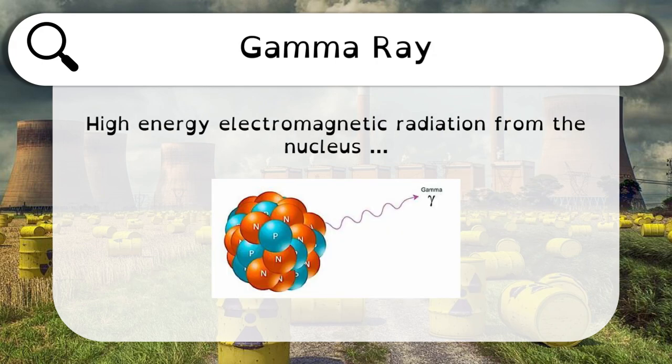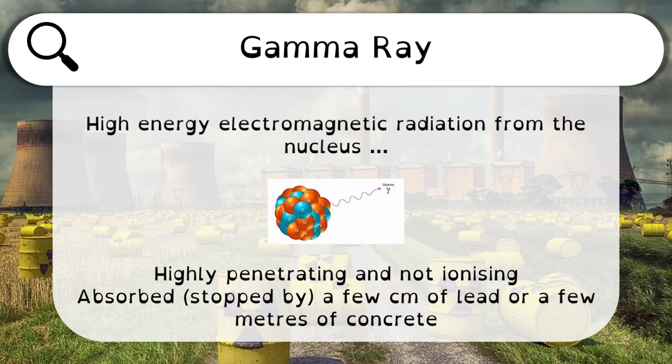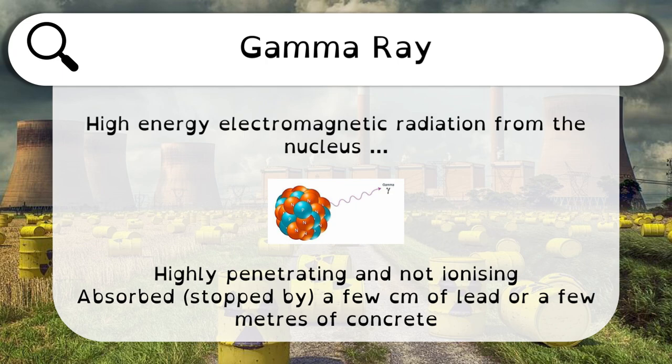Gamma is a high-energy electromagnetic ray that comes from the nucleus. Because it's a ray, it has no charge and is also massless, so therefore it's highly penetrating — it can pass through pretty much anything — and therefore it's not ionising. It gets stopped by a few centimetres of lead or a few metres of concrete, and through air it can travel a few kilometres.